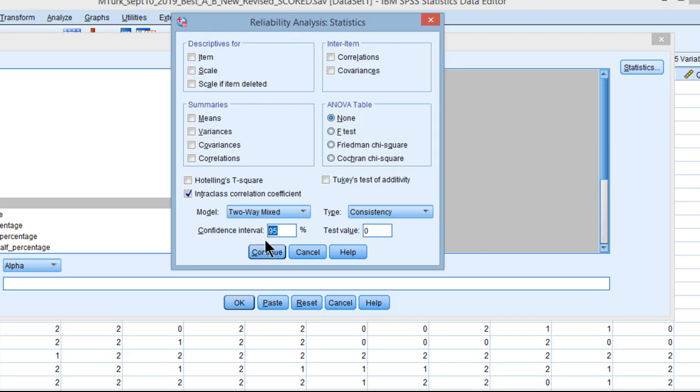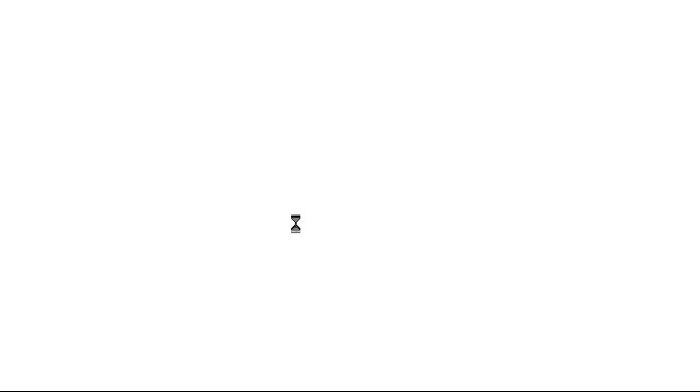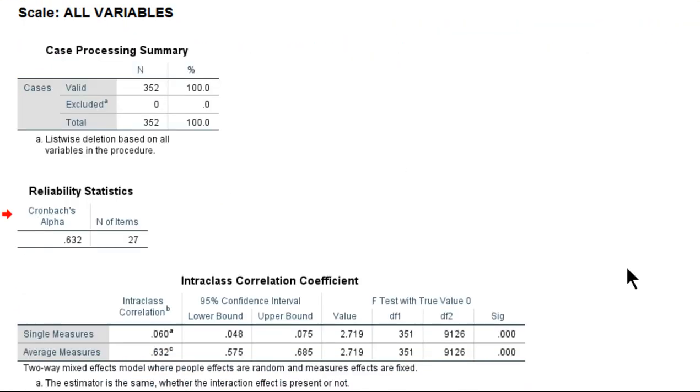So let me show you how this works. Click on Continue, really easy. Click on OK. And here I get the results associated with the reliability of these composite scores that I'm interested in.